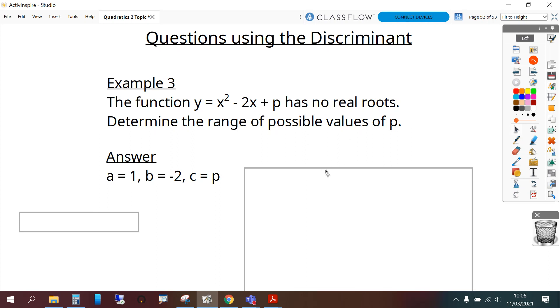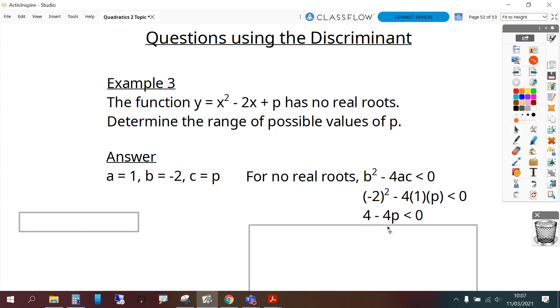So that means our first line of work can say b squared minus 4ac is less than 0. Substituting a, b and c in. Now tidying that up we get 4 minus 4p is less than 0.